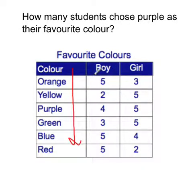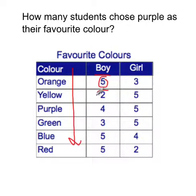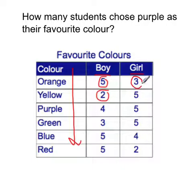Then we've got a tally. We've got the boys and we've got the boys' favourite colour. There are five boys that like orange, two boys that like yellow, and so on. Then we've got the girls in this column. The girls that like orange is three, girls that like yellow is five, girls that like purple is five as well, and so on all the way down.